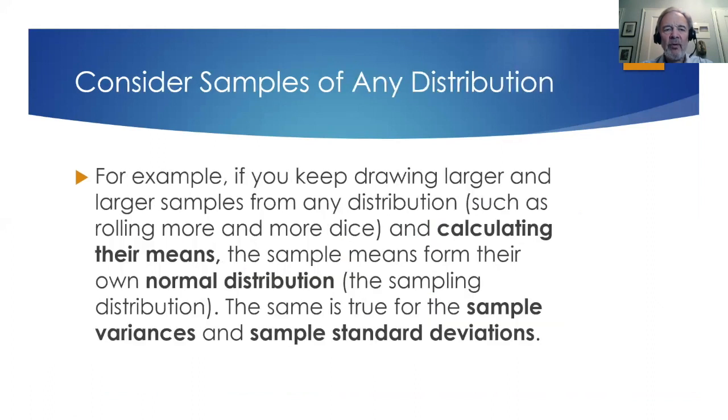Let's consider samples of any distribution. For example, if you keep drawing larger and larger samples from a distribution such as rolling one or more dice and calculating their means, the sample means form their own normal distribution, which we call the sampling distribution. The same is true for the sample variances and the sample standard deviations.